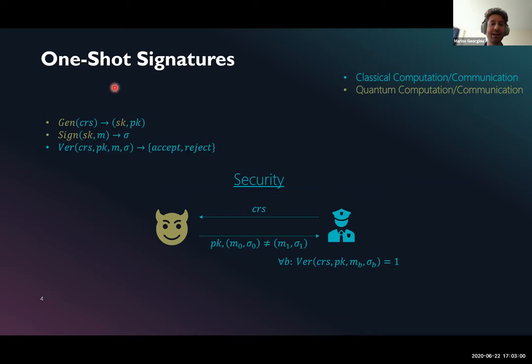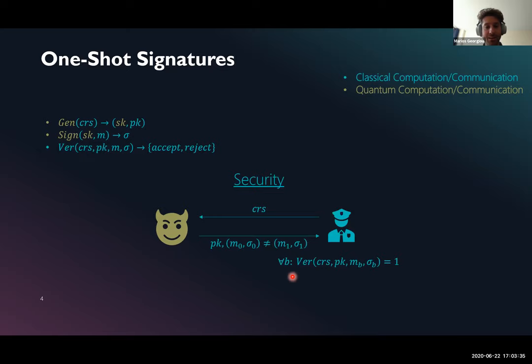The most important concept in this talk is the notion of one-shot signatures. Like classical signatures, one-shot signatures is a triplet of algorithms: a generation algorithm that outputs a secret key and a public key — but the secret key is quantum — a signing algorithm that signs a message, and a verification algorithm that verifies the message.